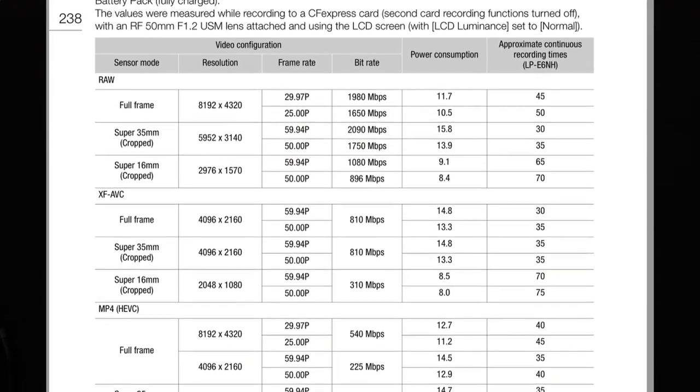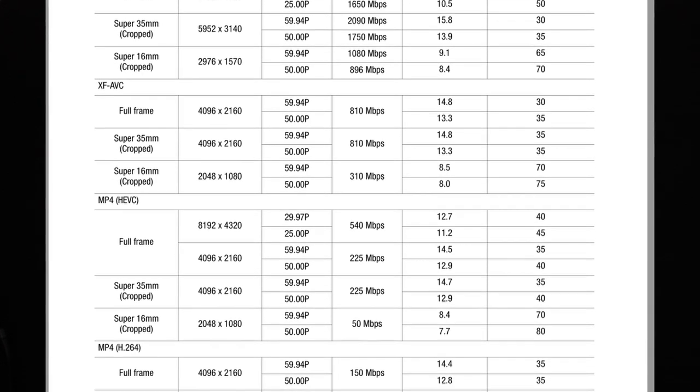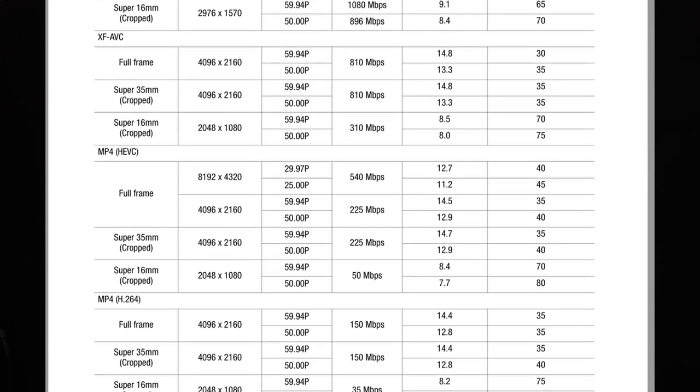Record times are even more complicated, partly due to things that draw power in the camera, but also because there are several different compression options. Canon published a table of the most power-intensive record settings on page 238 of the manual. However, this doesn't cover all operations or even modes many people shoot in, such as 24fps. For my own uses, I wanted to look at three formats Canon didn't cover: 4K 30fps, 2K 60fps, and 2K 30fps, all in full-frame with HEVC compression.